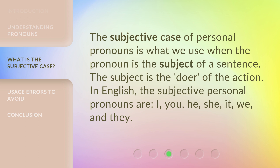The subjective case of personal pronouns is what we use when the pronoun is the subject of a sentence — the subject is the doer of the action. In English, the subjective personal pronouns are: I, you, he, she, it, we, and they.